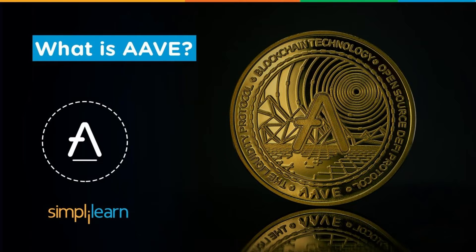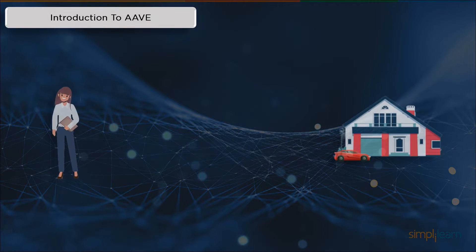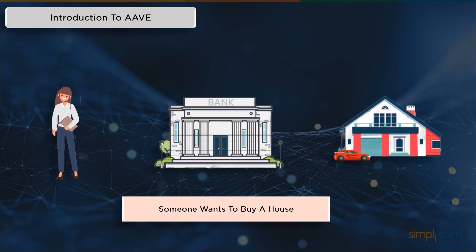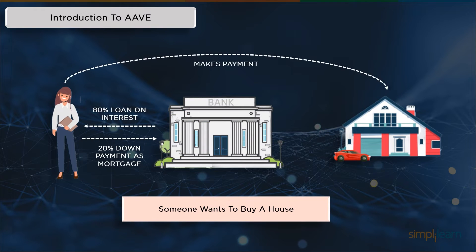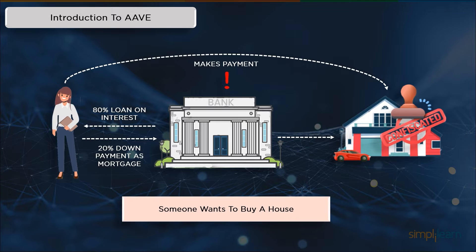Hey everyone. We often encounter situations where we feel like buying our own house, but sometimes it becomes a little too expensive. But you buy it anyway. To make that happen, you need to borrow a loan from the bank. So you put up a down payment of 20% so you can borrow the rest of the 80% from the bank and make the payments. And if you fail to make the payment to the bank, they can easily confiscate the house.